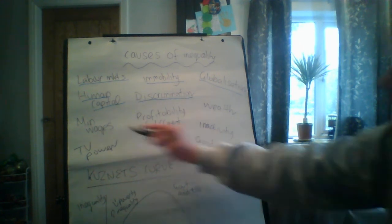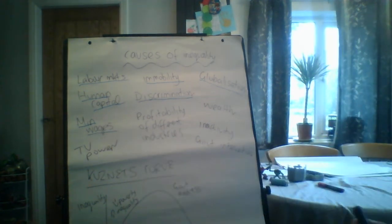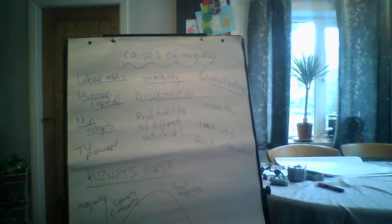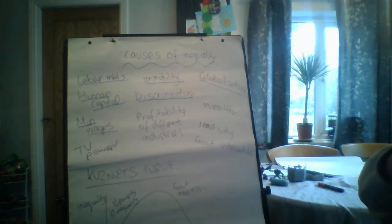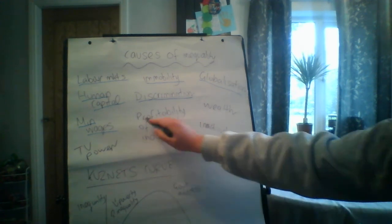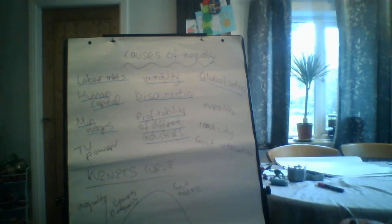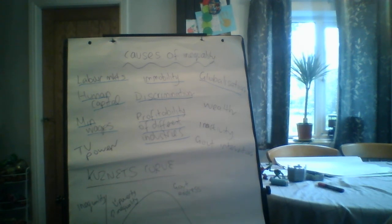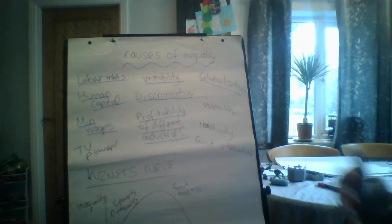Minimum wages can both limit and cause inequality. They should help workers escape at least absolute poverty, but different minimum wage rates for certain age groups mean 18-year-olds can be paid less than 21-year-olds. The industry you work in can also be a cause: if you're in a struggling industry, it's very unlikely you'll get the wage growth someone in a more successful industry would receive, so different wage rates exist between different industries.